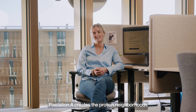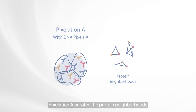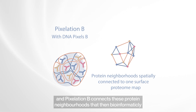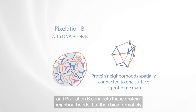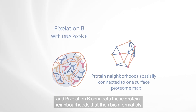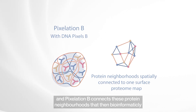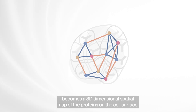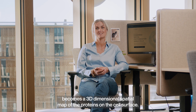Pixelation A creates the protein neighborhoods, and pixelation B connects these protein neighborhoods, which then bioinformatically becomes a three-dimensional spatial map of the proteins on the cell surface.